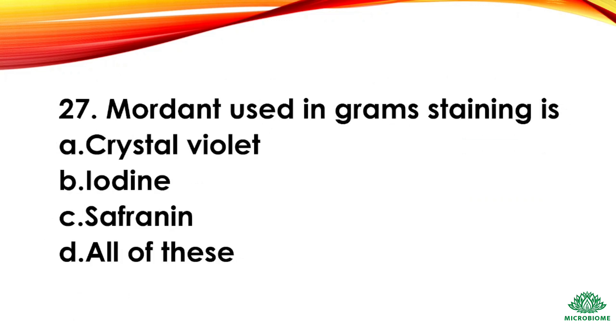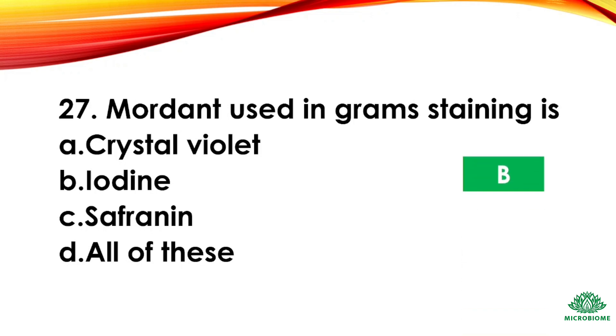Question 27: The mordant used in Gram staining is — options: crystal violet, iodine, safranin, all of these. The right answer: option B, iodine.